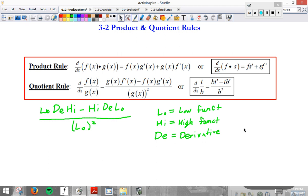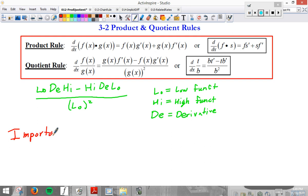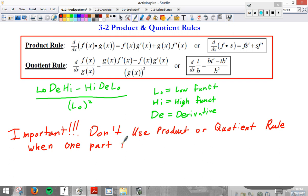Before we move on, I will say it's important, very important, so important I'm going to write in red. Don't use product or quotient rule when one part is a constant.